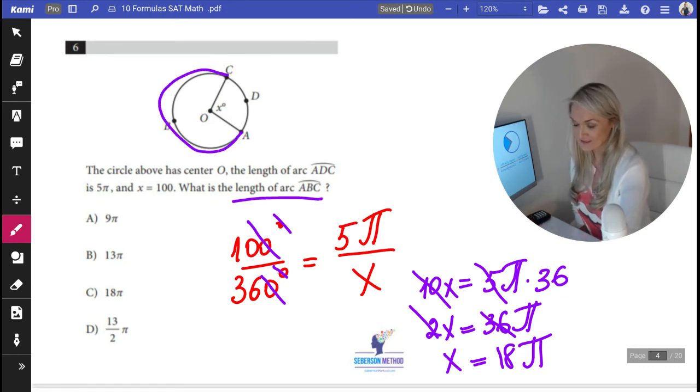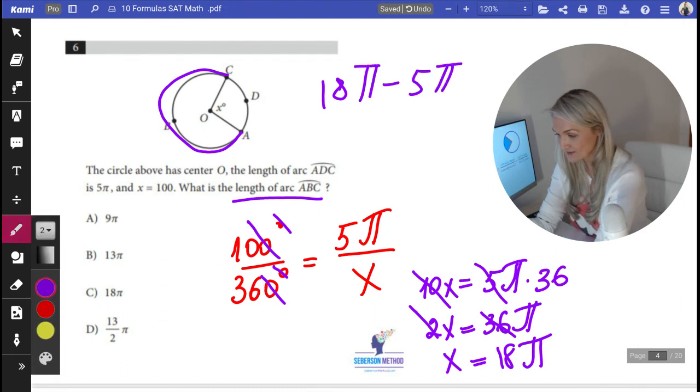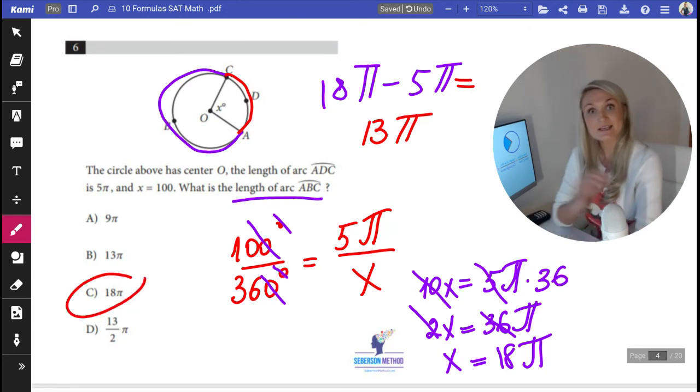How do you find it? It's 18π minus 5π, because they told us that this arc length is 5π, and that equals 13π, answer choice C.